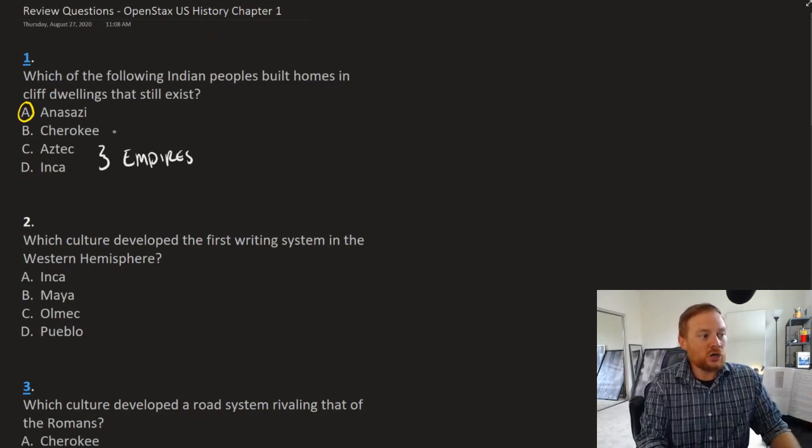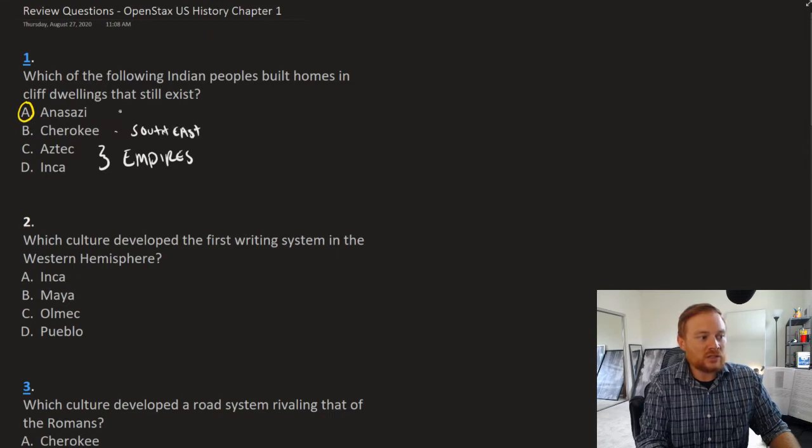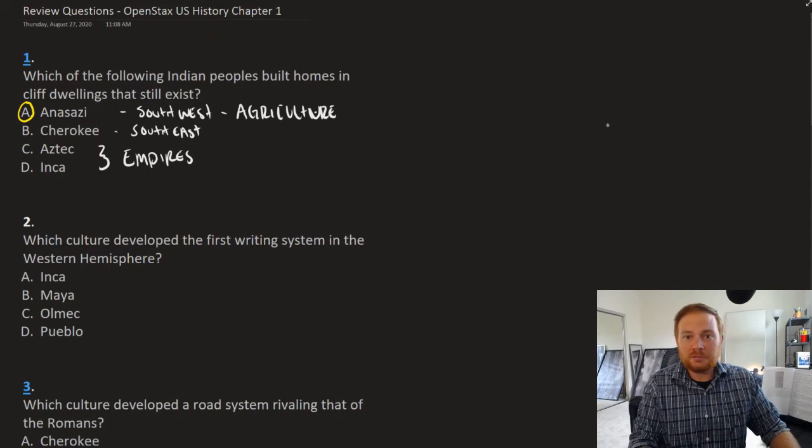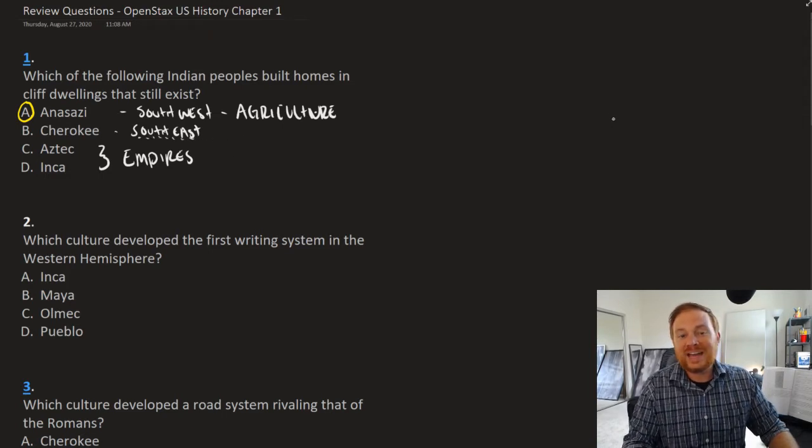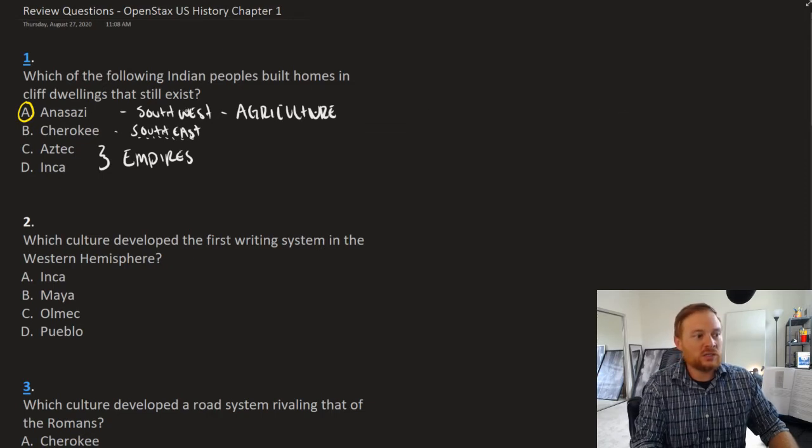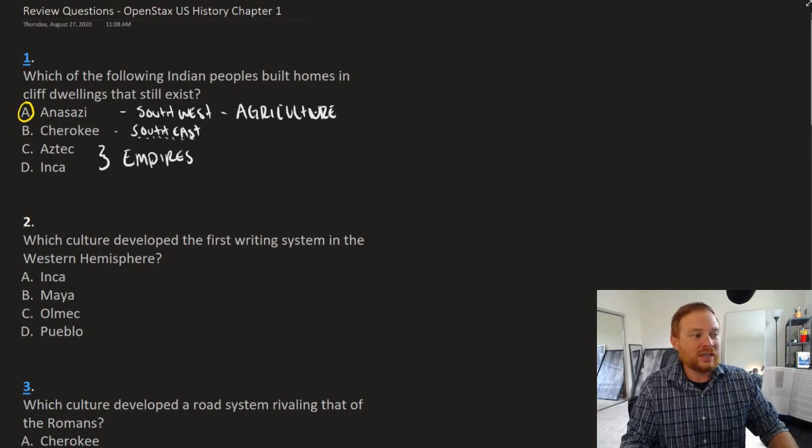The Cherokee are located in the Southeast of the United States, the Anasazi in the Southwest. Because the Anasazi rely almost exclusively on agriculture, that means that their dwellings can be permanent because they're not hunting and gathering, whereas the Cherokee might be a little bit more inclined to hunt and therefore would not have as permanent of structures. So it's the Anasazi in the Southwest due to their reliance on agriculture.